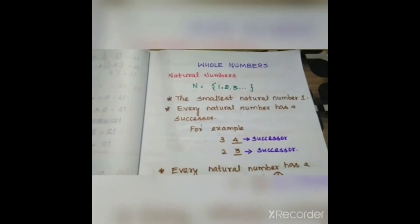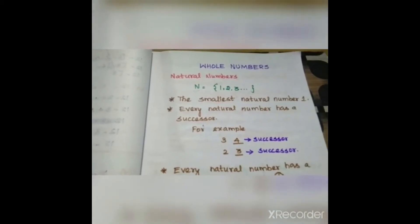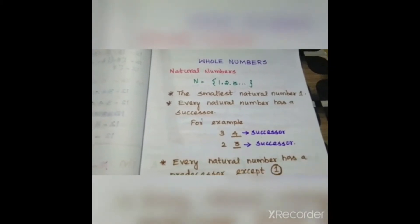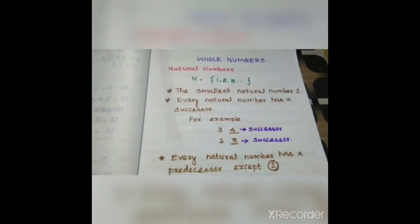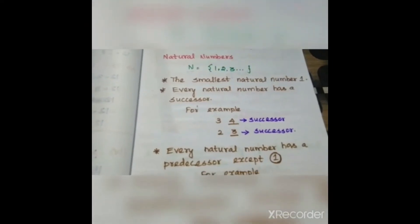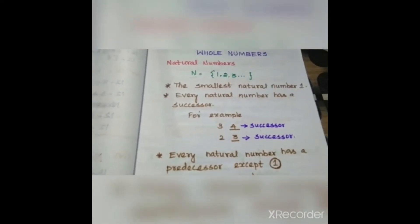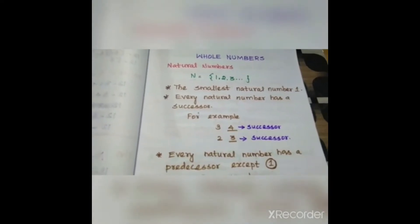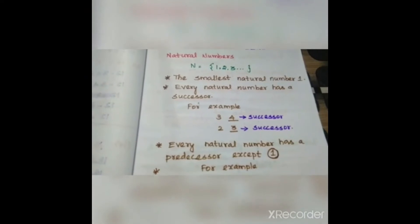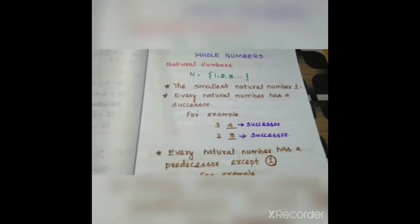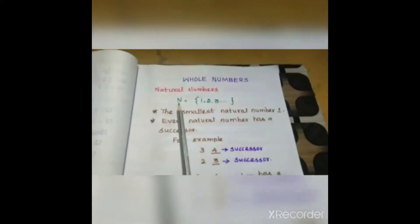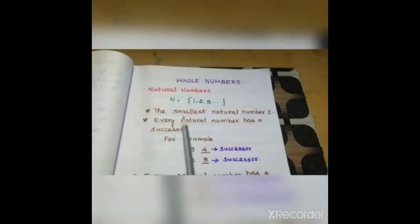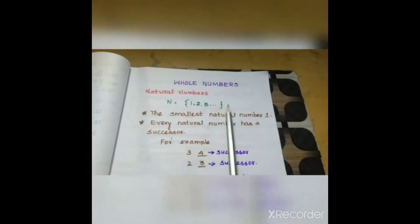In our day-to-day life, to count things we use numbers like 1, 2, 3, and so on. The collection of this kind of numbers — 1, 2, 3, and so on — we call this collection of numbers as natural numbers. We represent the set of natural numbers with the letter N.